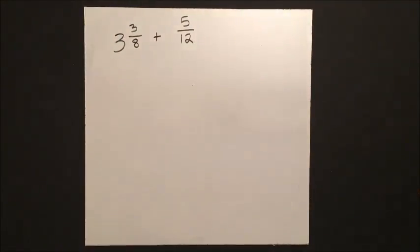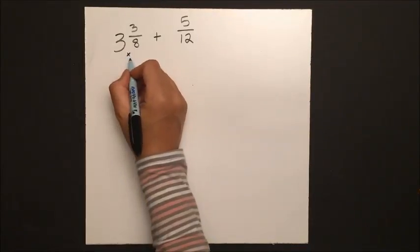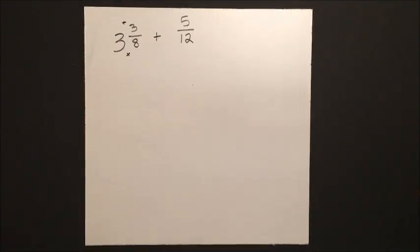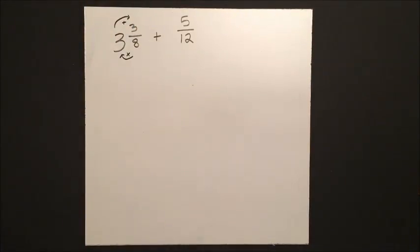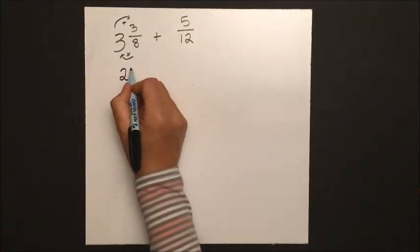Let's try another one with a mixed number. The shortcut for turning a mixed number into an improper fraction is 3 times 8 is 24, plus the 3 is 27.